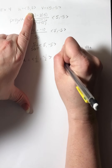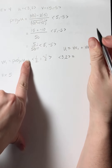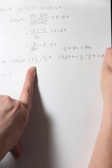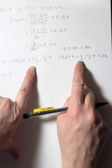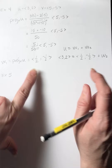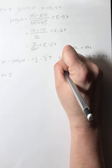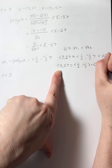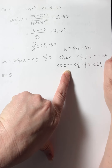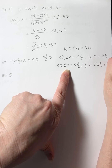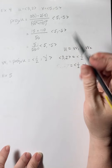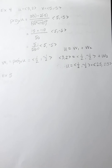Since u = (3, 2) and w sub 1 = (1/2, -1/2), to find w sub 2 we subtract: 3 minus 1/2 and 2 minus negative 1/2 (which is plus 1/2), giving 2.5. So the answer is: u equals (1/2, -1/2) plus (2.5, 2.5).